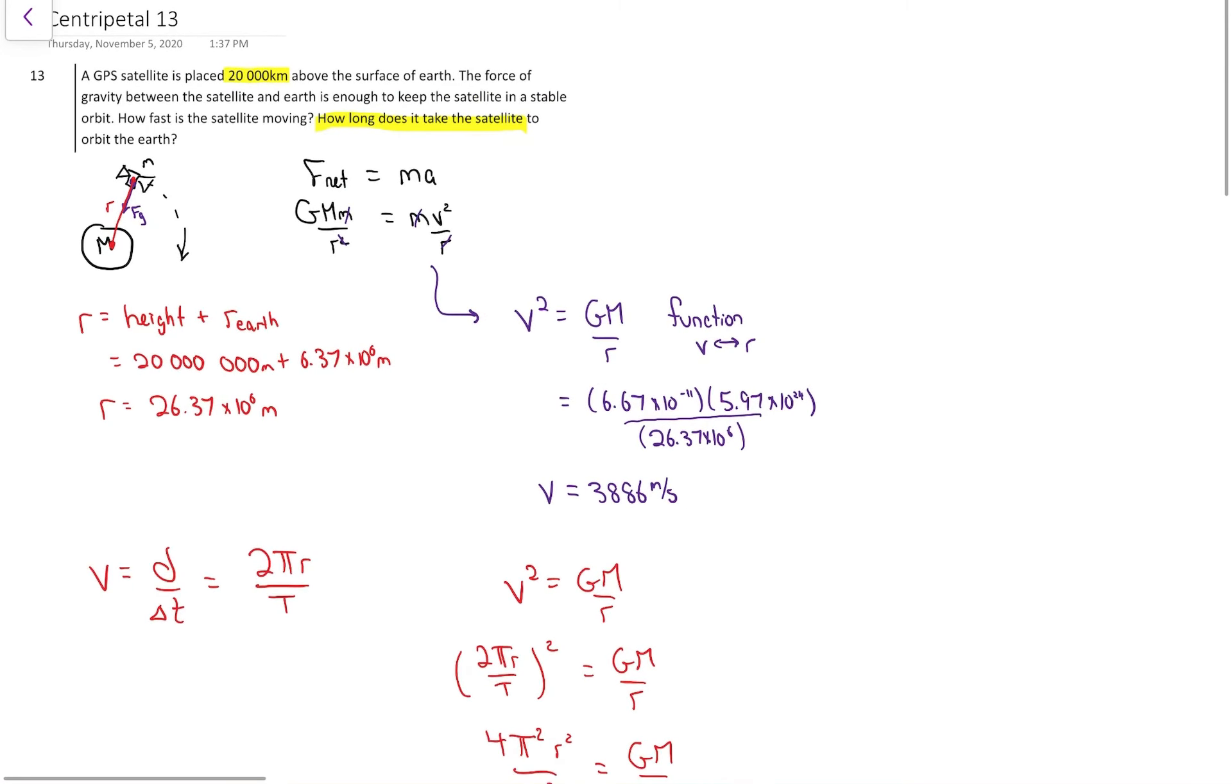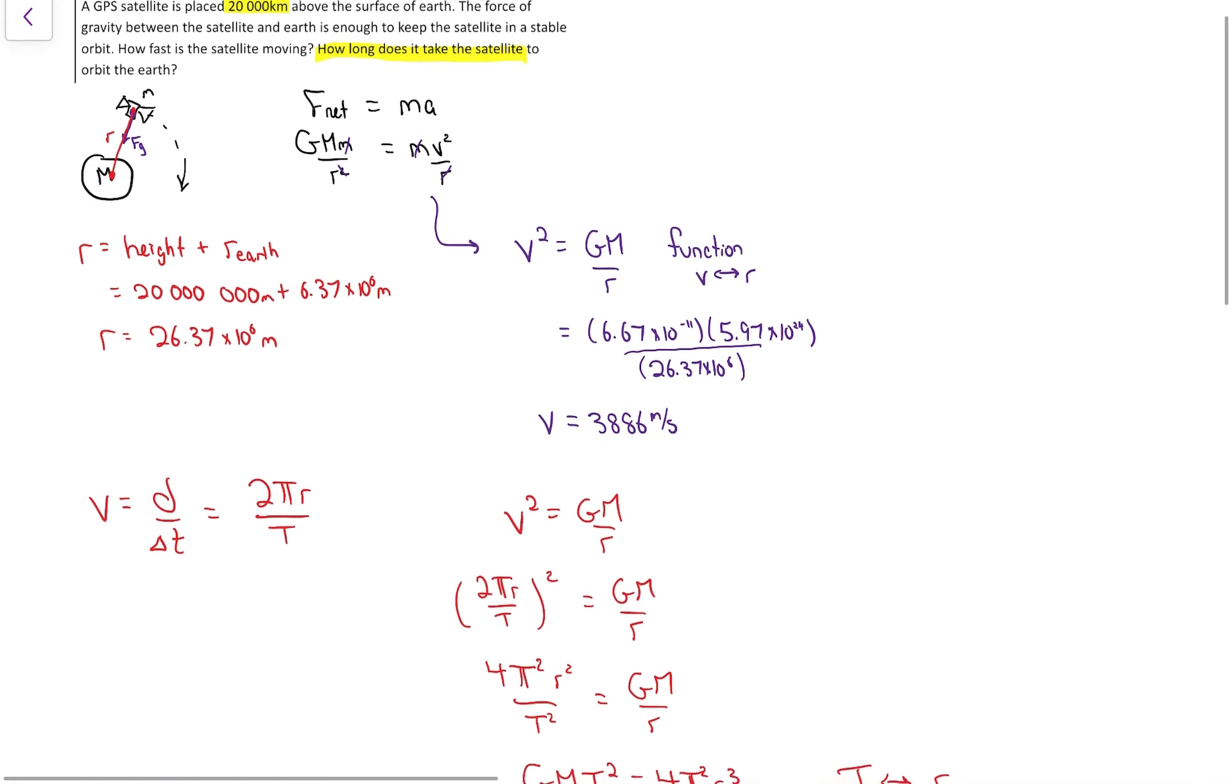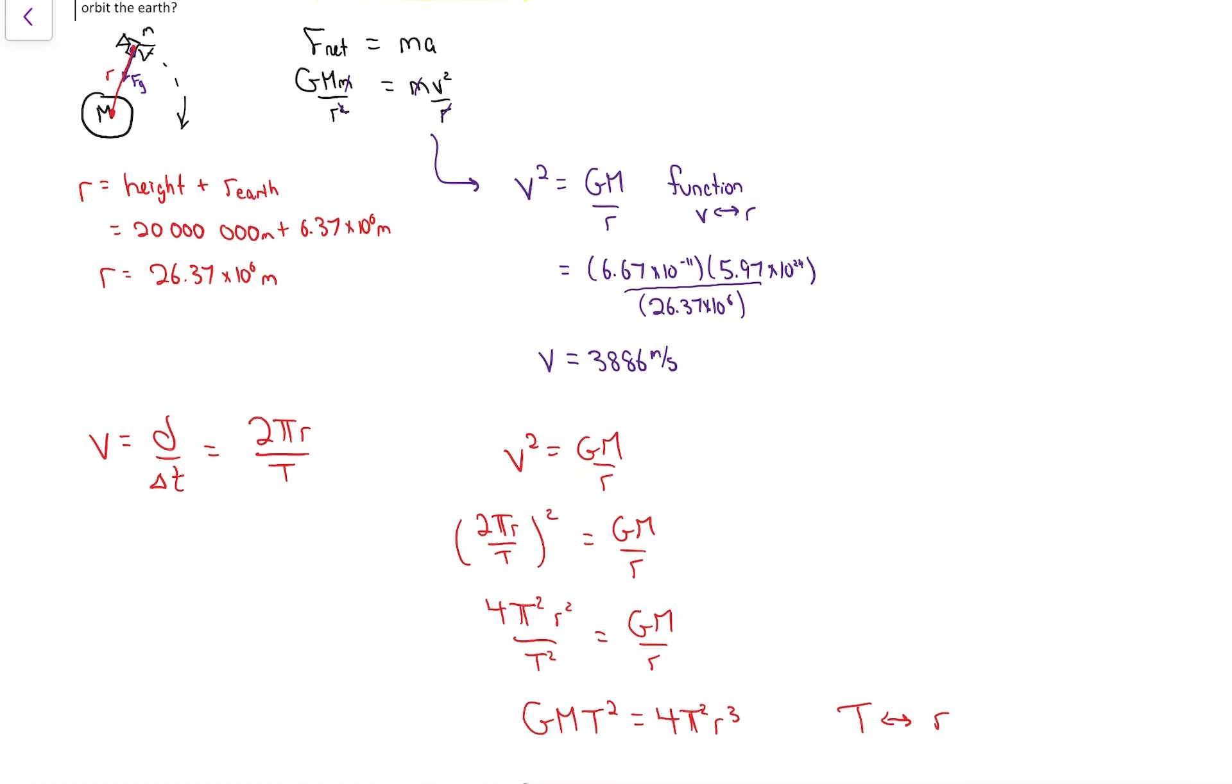GPSs are really kind of cool. They're programmed with special relativity since they're going so fast. They're programmed with general relativity since they're higher where gravity is a little bit weaker. But what we'll need for now is what we'll use again are these ideas that there's a function that connects the speed to the radius and another function that connects the radius to the time period. This second one, that GMT² 4π² r³ equation, that's one of Kepler's laws. If you go into Earth and space, you'll hear about that one again.